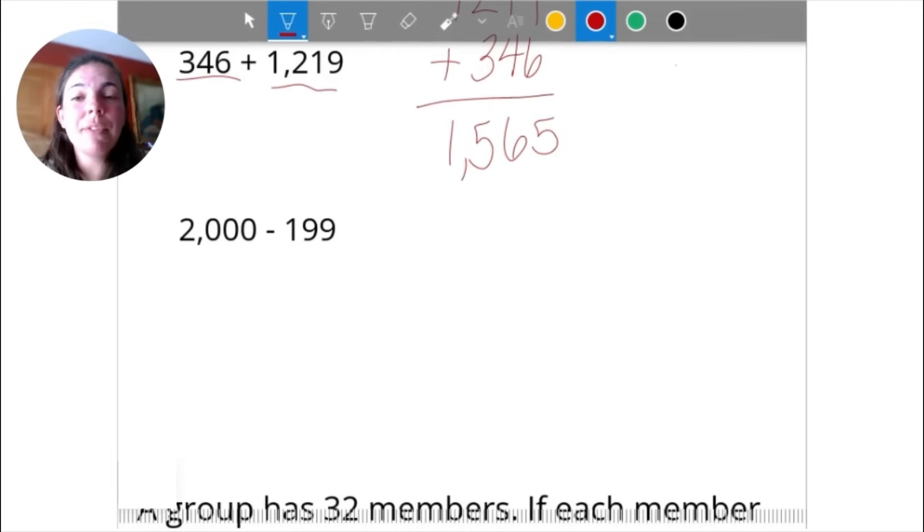What about some subtraction? 2,000 minus 199. I'll do it the traditional way real quick and then I'll show you a little trick. We're going to line up our place values appropriately. If I go to subtract 0 minus 9, we can't do that, so we have to go over and borrow. I'm going to have to go all the way over to the thousands place, turn this into a 1, and the next place value over the hundreds, that 0 becomes a 10. That became a 9, my tens place becomes a 10, and now that becomes a 9, and my ones finally becomes a 10. Now I can subtract. 10 minus 9 is 1, 9 minus 9 is 0, 9 minus 1 is 8, and then 1 minus nothing is just 1. So 1,801.